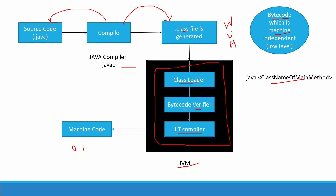Let me explain the execution process once again. The first step is we need a source code. If we have source code we need to check whether the code is correct or not, so we have the compile step, which is done by the JavaC compiler. If the compile step is successful we will get a .class file. This .class file is called the bytecode. Now that the bytecode is generated, we need to run the Java program, so we give this bytecode to the class loader. The class loader will load all the classes required to run the program.